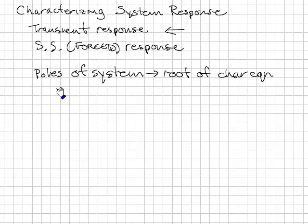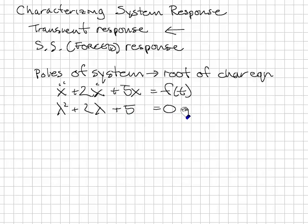given a differential equation of the form x double dot plus 2x dot plus 5x equals some function of time, f is the forcing function. We are interested in the characteristic equation for this system. You take the differential equation and replace the powers with a variable we're using, lambda. Lambda squared plus 2 lambda plus 5 equals 0. So this is now the homogeneous equation. Homogeneous means the forcing function is set equal to 0. And we solve for the roots of that.